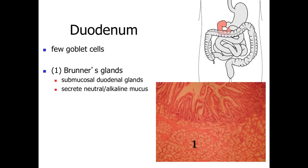Looking at different regions within the small intestine: the first is the duodenum, which has relatively few goblet cells but is characterized by many submucosal duodenal glands — Brunner's glands — which secrete a neutral or slightly alkaline mucus into the lumen of the duodenum. This is important because the highly acidic materials coming from the stomach need to be neutralized so they do not damage or erode our intestinal lining cells.